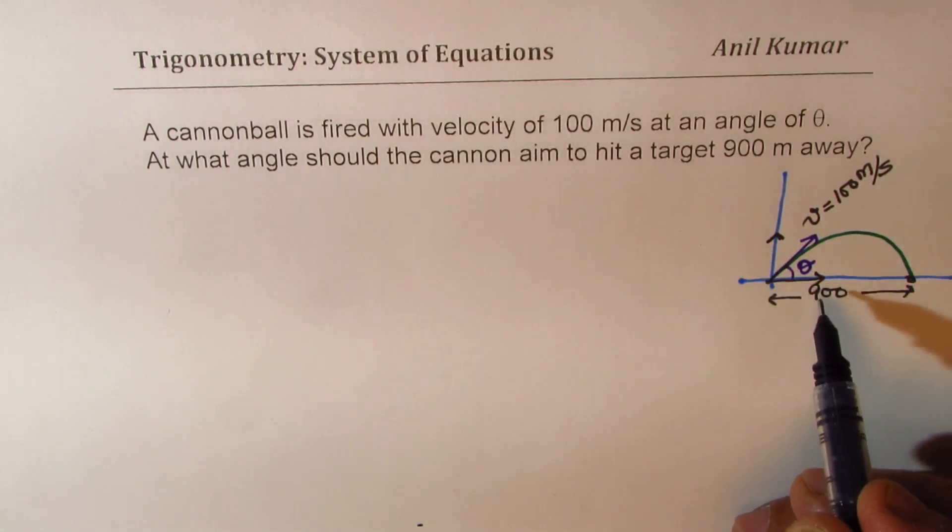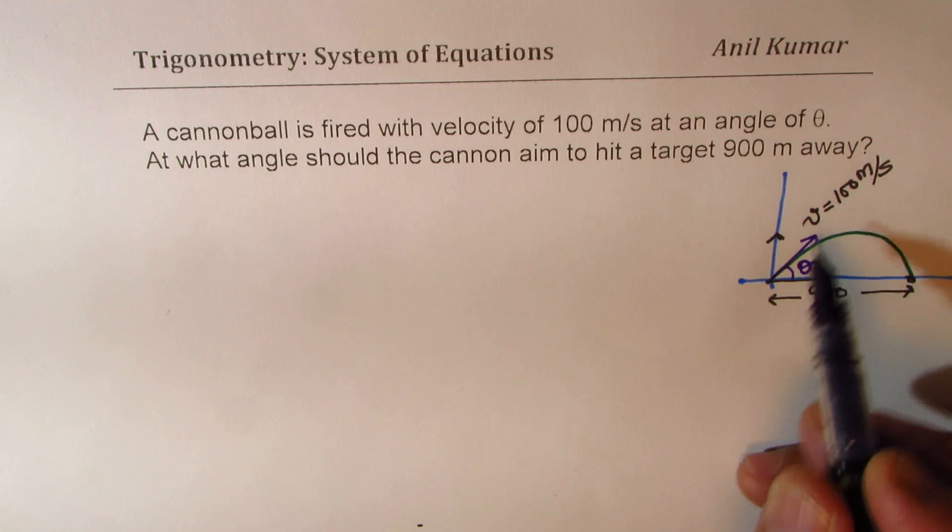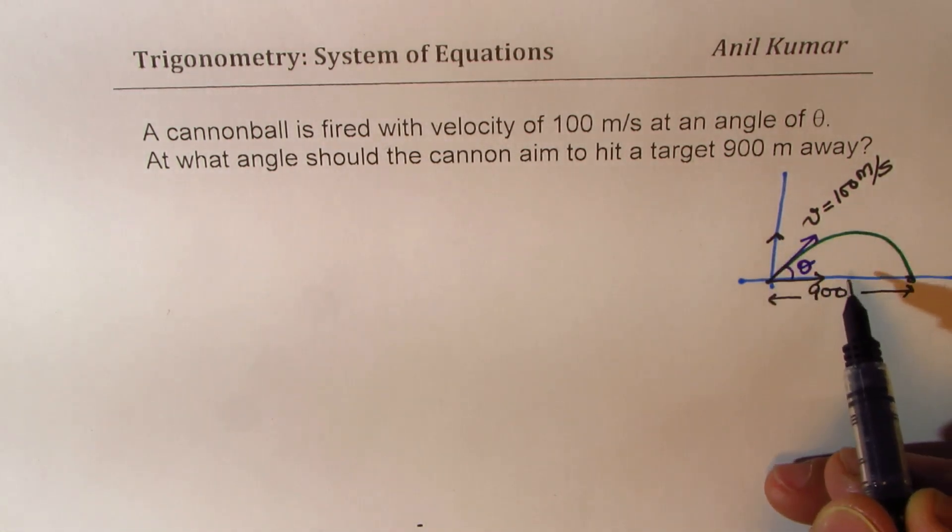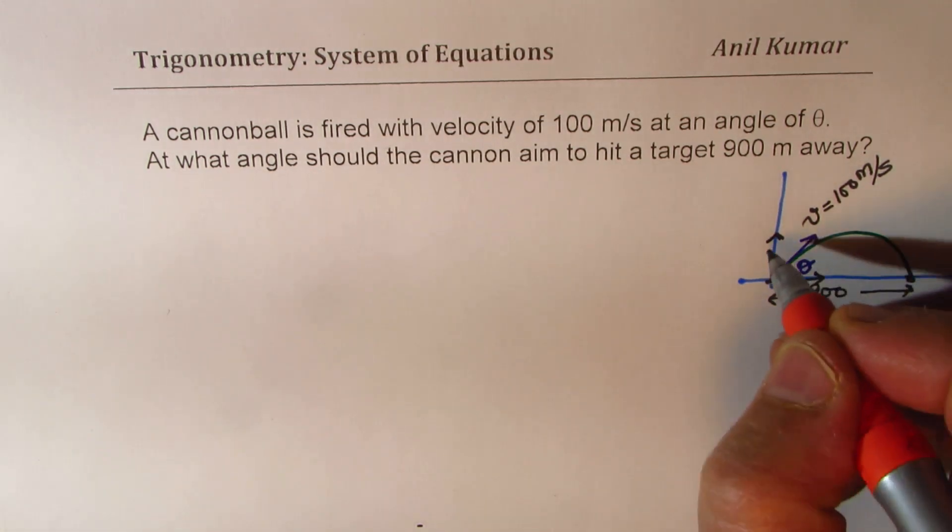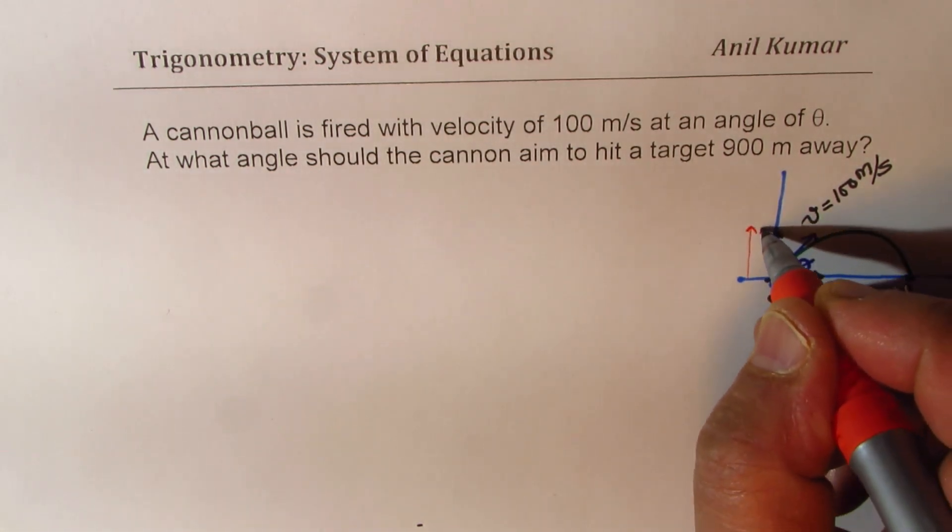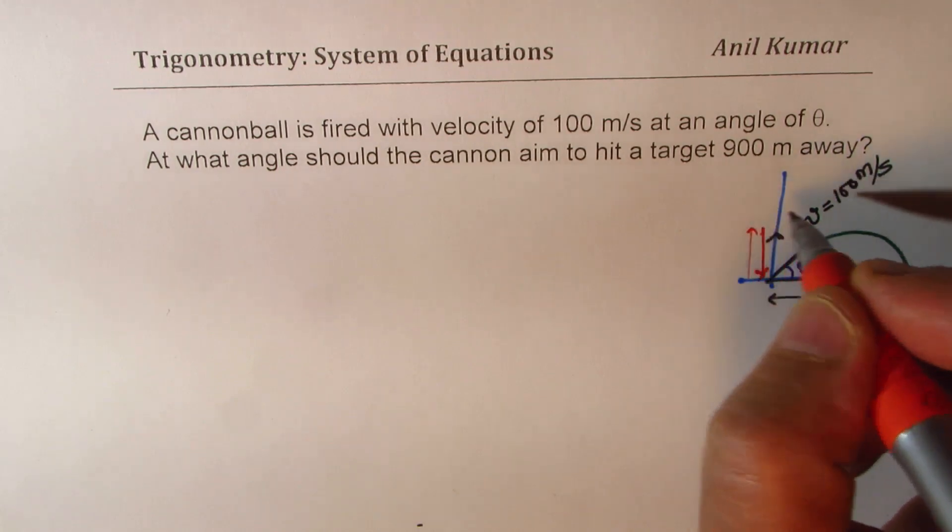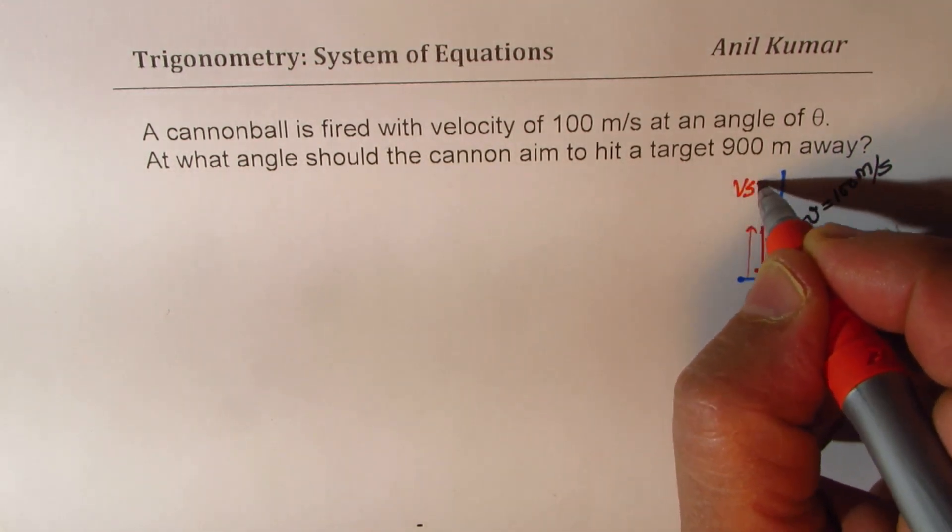Now, these two components help us in different ways. The vertical component helps for the cannonball to go up and then come down, right? So it reaches the maximum height and then comes down and that is because of V sin theta.